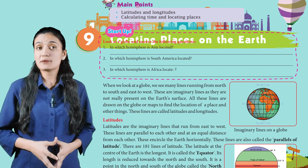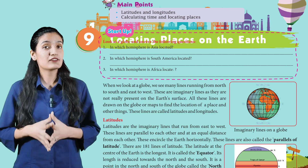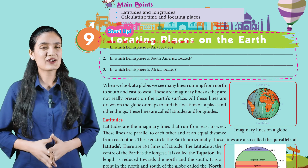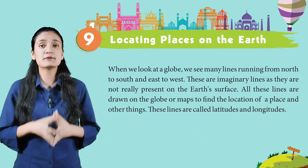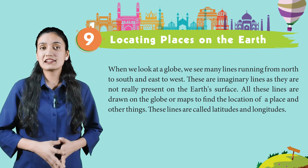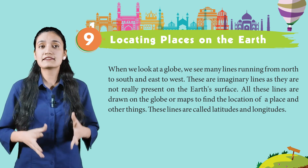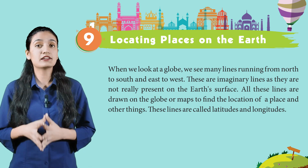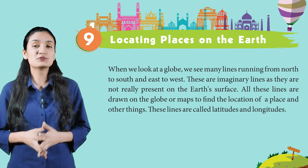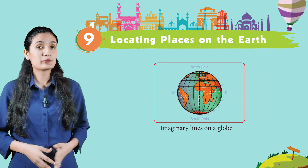First, in which hemisphere is Asia located? Second, in which hemisphere is South America located? Third, in which hemisphere is Africa located? You have to see the globe carefully and answer these questions. When we look at the globe, we see many lines running from north to south and east to west. These are imaginary lines, as these are not really present on the Earth's surface. All these lines are drawn on the globe and on maps to find the locations of a place. These lines are called latitudes and longitudes.